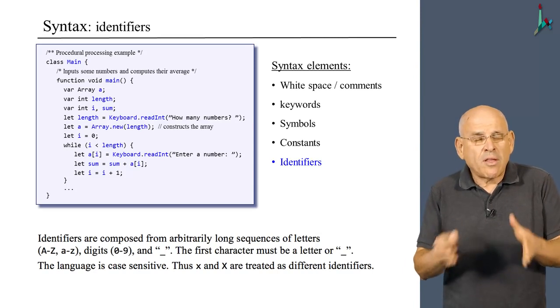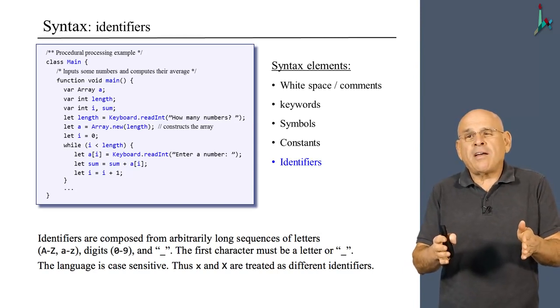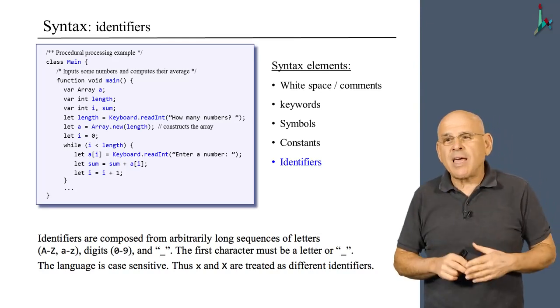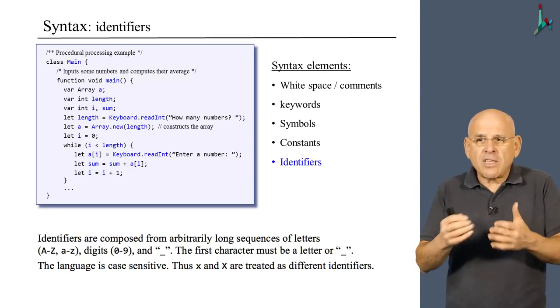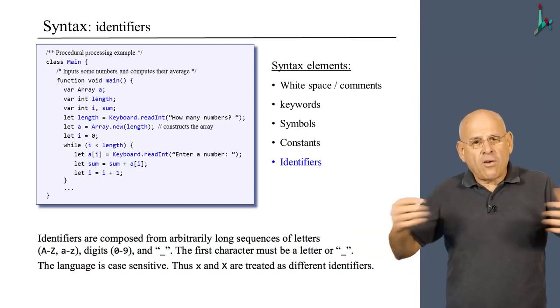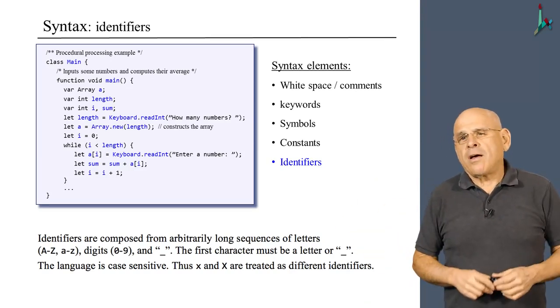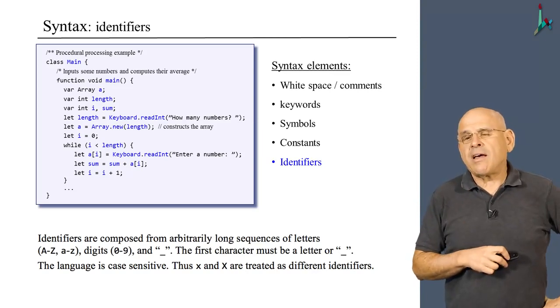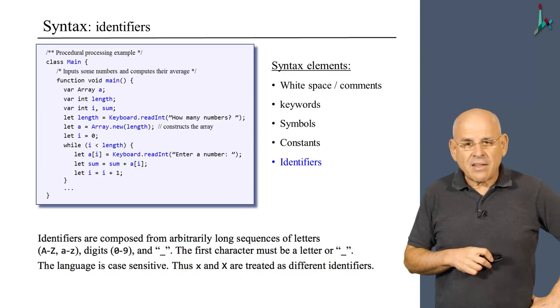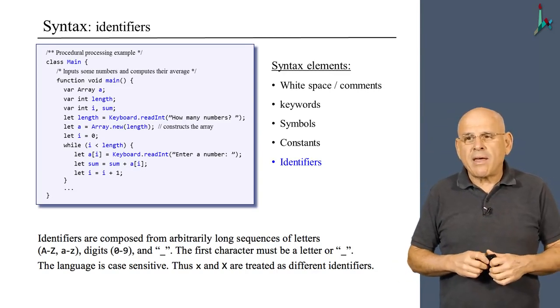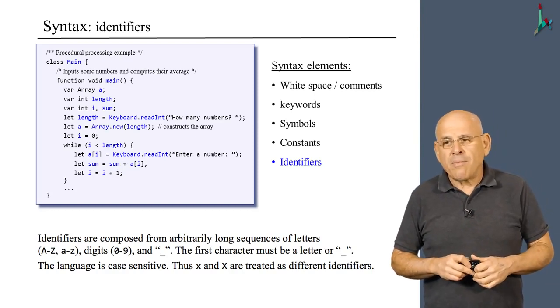This world typically consists of classes and methods and APIs. Most of the code that the programmers write is, in fact, those little languages that he or she creates when they design these APIs. We see it here: keyboard dot readint, and so on. All these little languages consist of identifiers that the programmer has invented. That's why it's so important to come up with good identifiers, because it will make your code much more readable.